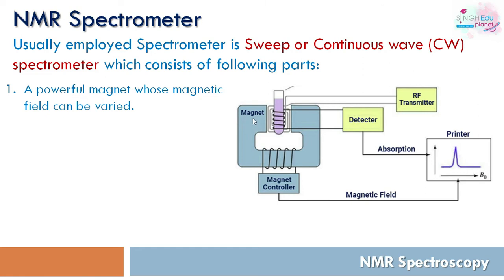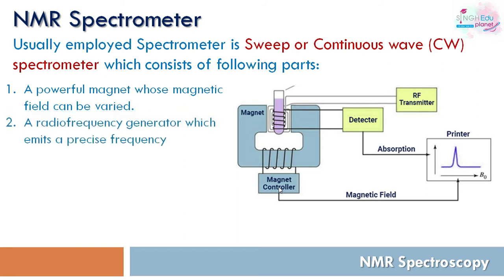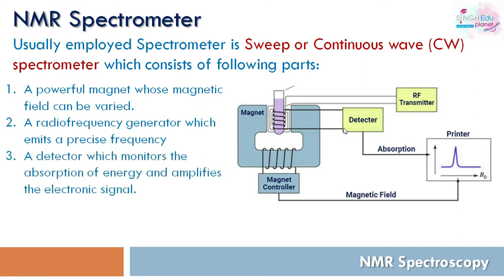There are four main parts. First, a powerful magnet which can be varied by a magnetic controller. Second, a radio frequency generator — the RF transmitter — which gives a precise frequency so we can obtain our graph at a particular frequency. Third, a detector, which handles the absorption of energy and amplification of the electronic signal.